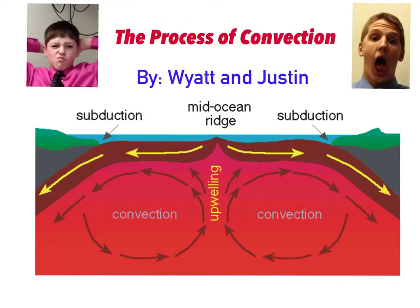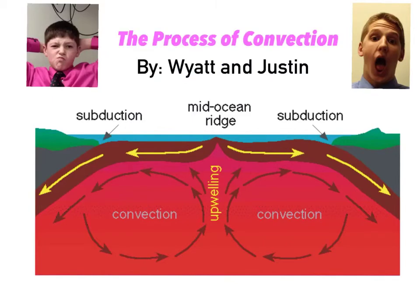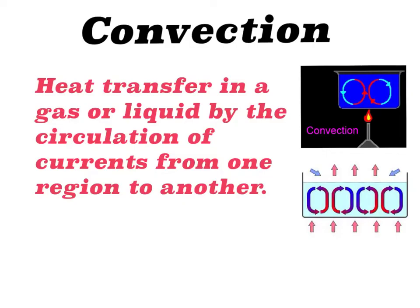The Process of Convection by Wyatt and Justin. Relations to Plate Tectonics: heat causes convection currents, a movement of rising and sinking caused by heat inside the molten magma. Convection is defined as heat transfer in a gas or liquid by the circulation of currents from one region to another.